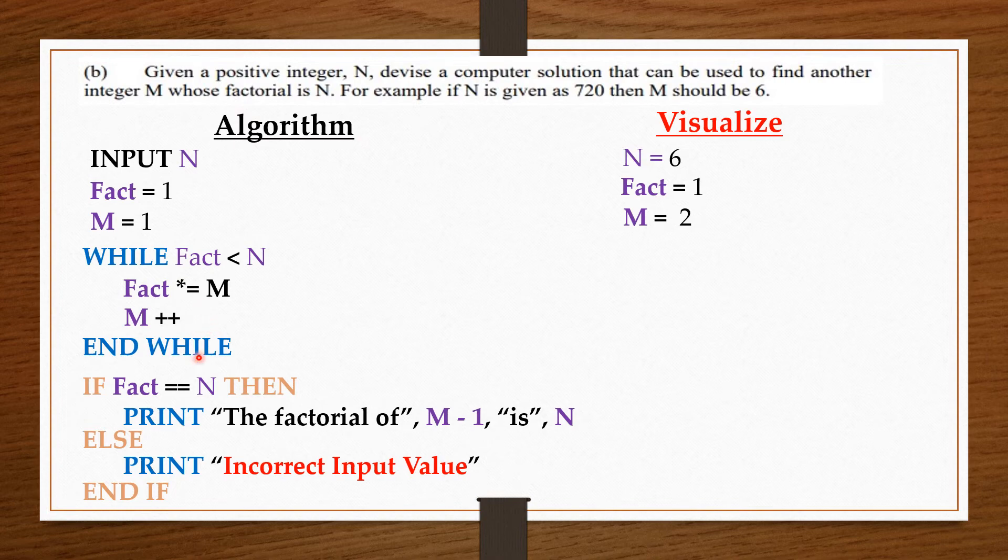Now, fact is 1 and 1 is less than 6. So, we multiply the fact, which is 1, by M, which is 2. So, 1 times 2, we get 2. So, now fact is 2. Then we increase M by 1. So, M becomes 3. Then we end while.